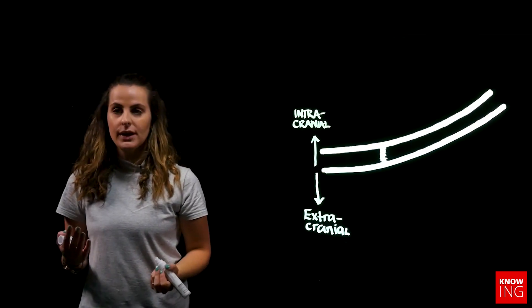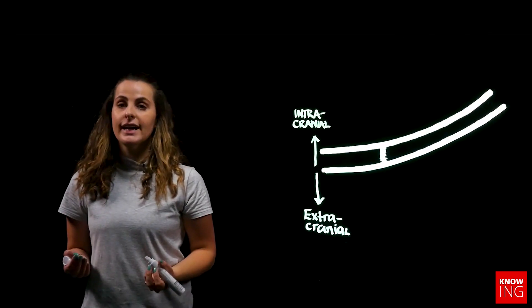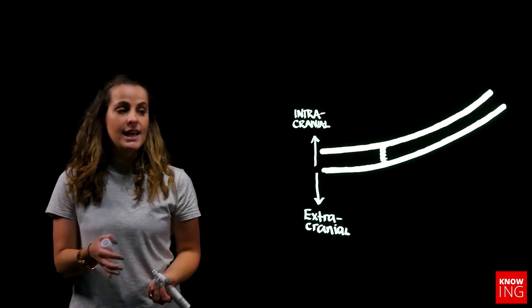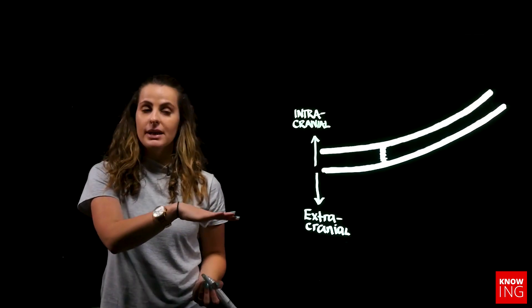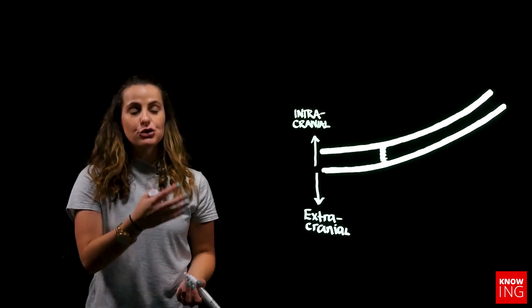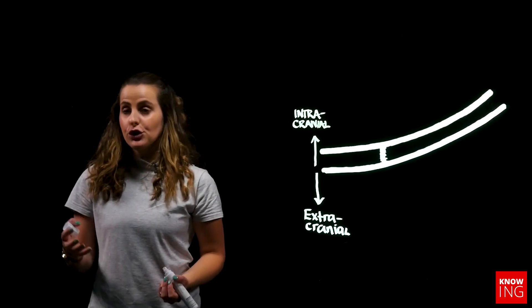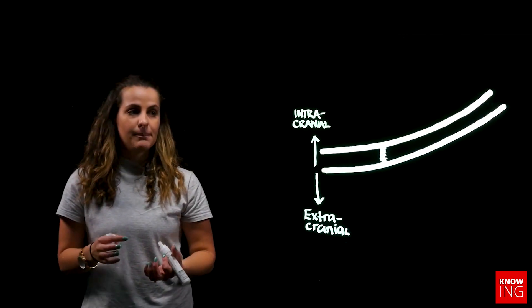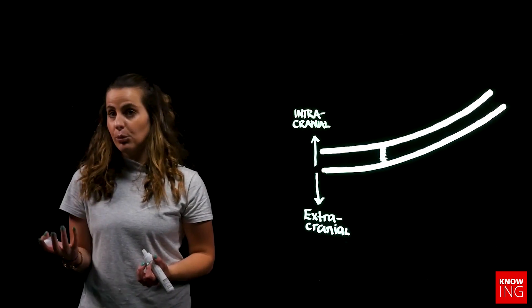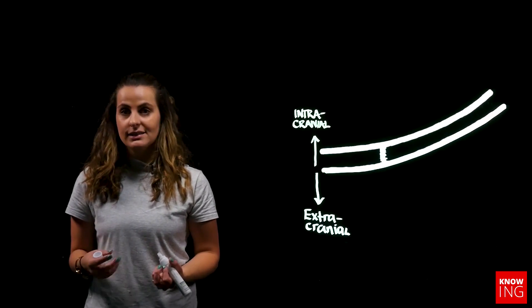When talking about intracranial versus extracranial hemorrhages, an extracranial hemorrhage is located exterior to the skull but deep to the skin. An intracranial lesion or collection is internal — within the skull cavity — and will be either associated with the brain or external to the brain in the form of the meningeal layers.